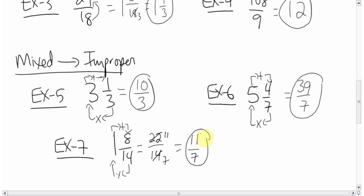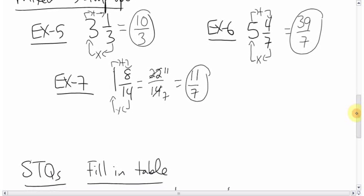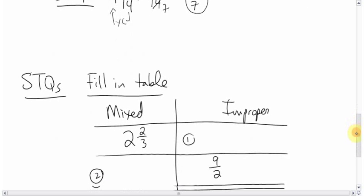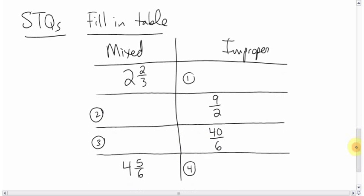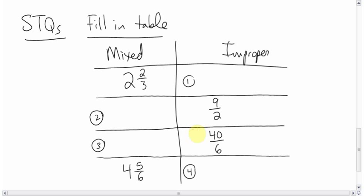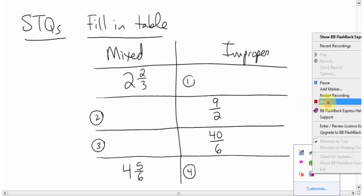All right, so there you are, and here you are. I'd like you to, for the skill testing questions, draw this table and then just fill it in. If I give you the mixed, give me the improper. If I give you the improper, give me the mixed. And so on and so forth. That's it. Talk to you later. Bye bye.